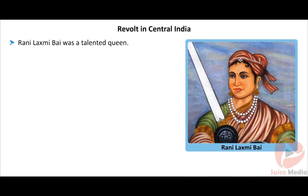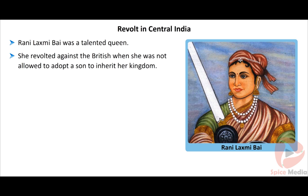Revolt in Delhi and Lucknow: Delhi came under the control of the rebels in 1857. The revolt was suppressed by Sir Arcdale Wilson, Nicholson, and Sir John Lawrence. British soldiers killed Indians ruthlessly. The Mughal Emperor Bahadur Shah II was accused of treason and exiled to Rangoon. In Lucknow, the rebels killed Sir Lawrence and Colonel Neil, who were chief commissioners of the British army. Begum Hazrat Mahal, wife of the Nawab of Awadh, actively took part in the revolt.